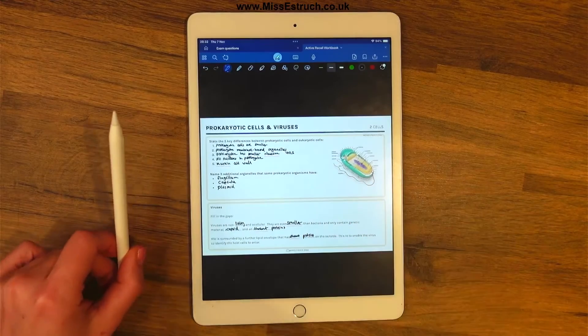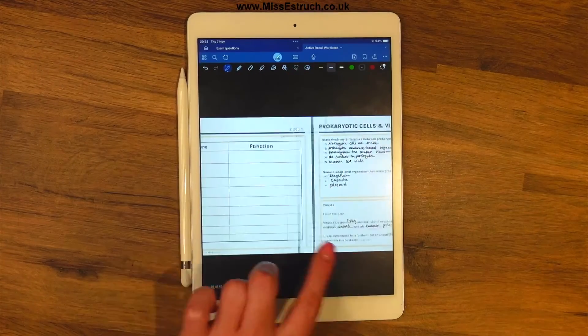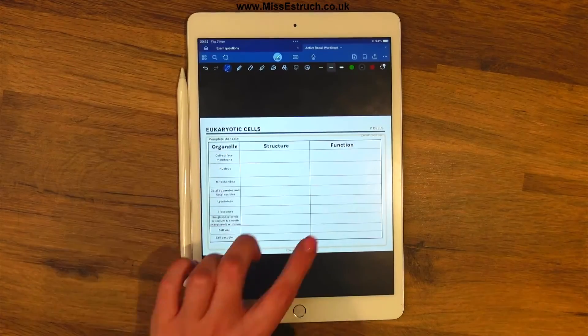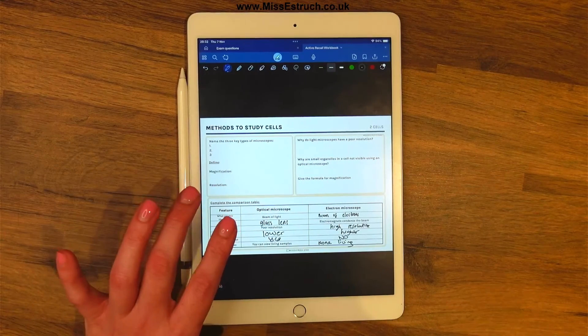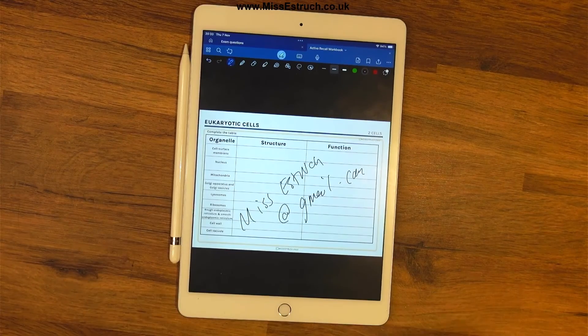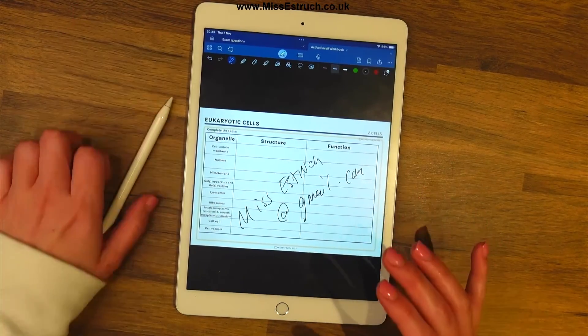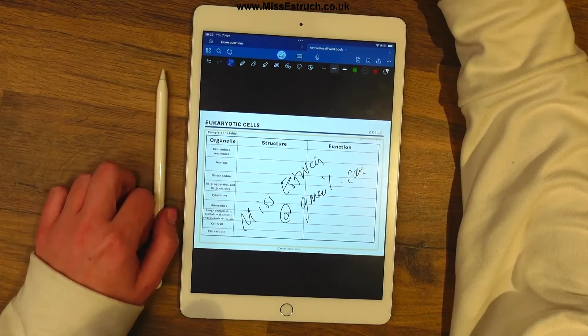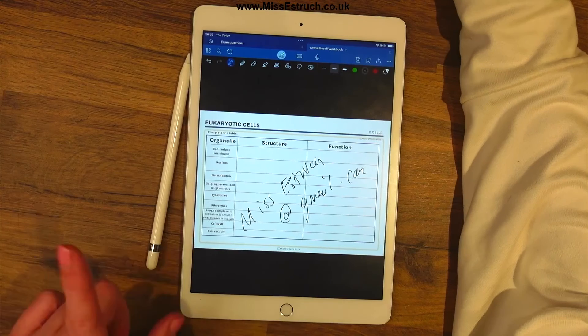Okay, there we go then, that takes us to the end of the questions today. The exam style questions and active recall workbook, if you do find this sort of thing helpful to see how you can actually test your knowledge before you go on to exam questions, head over to missesterich.co.uk and you'll be able to find my active recall workbook there. If you have any requests of what you'd like me to go through then let me know either email or send me a message and I will take a look. But for now that is it for this evening. Hope you found it helpful and I will hopefully see you next week everyone.